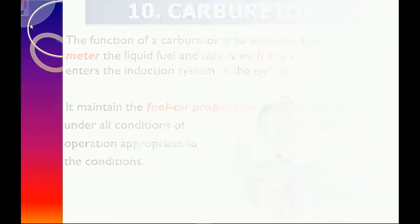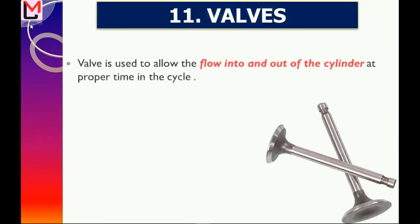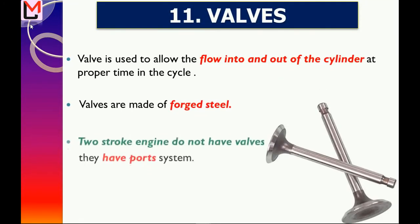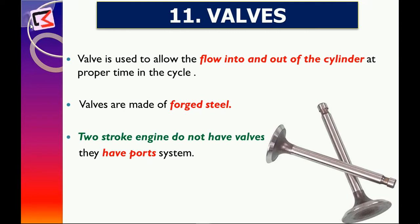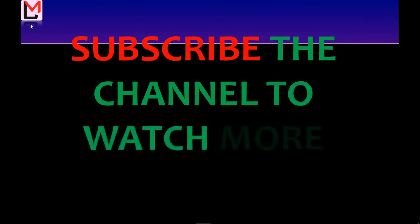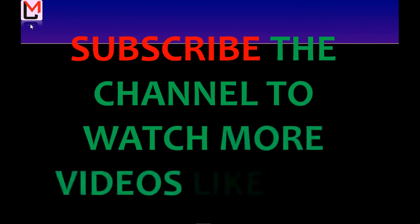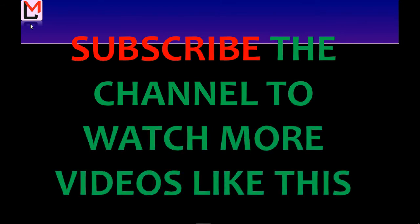Now we will learn about the valve. It is used to allow the flow of gases into and out of the cylinder at the proper time in the cycle. Valves are made up of forged steel. In two-stroke engines, ports are used instead of valves. The remaining parts will be discussed in our third video — subscribe to the channel and comment with suggestions so that upcoming videos can be improved. Thanks for watching.